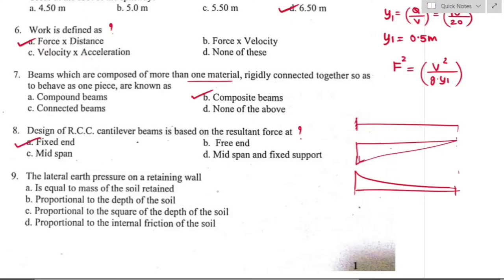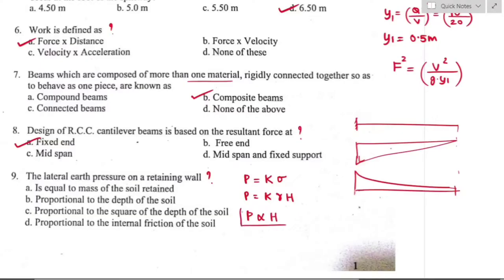Question number nine: the lateral earth pressure on a retaining wall. Lateral earth pressure at any depth is given by: pressure = coefficient of earth pressure × vertical stress = K × γ × z. From this relation, lateral earth pressure is directly proportional to depth of the soil. Option B is the right answer.